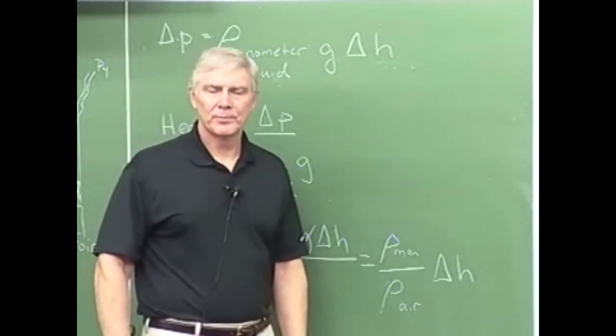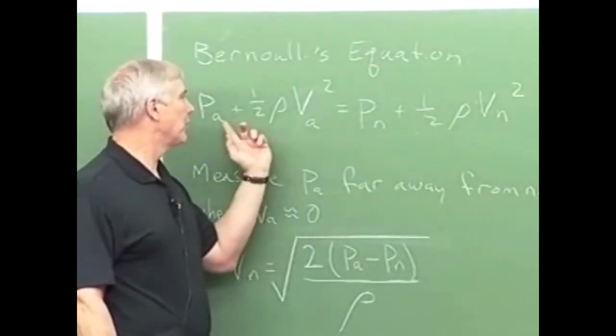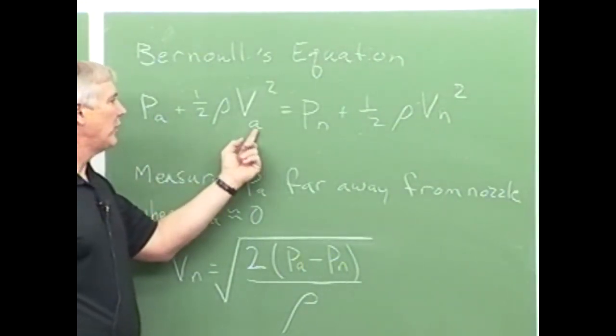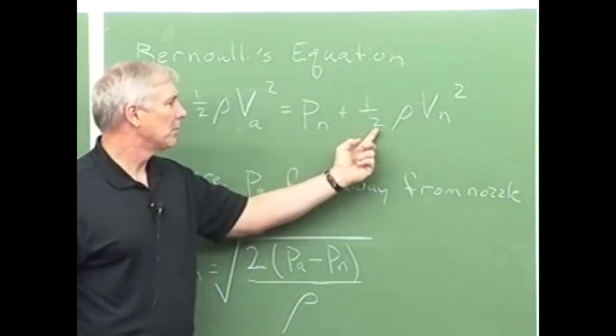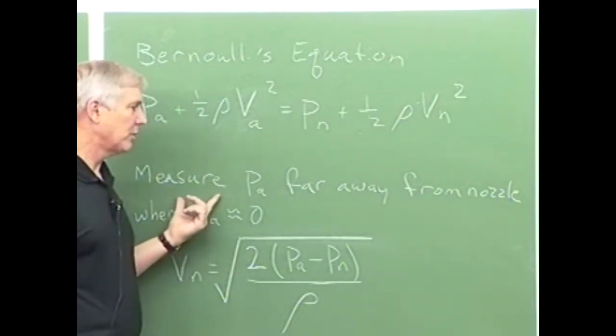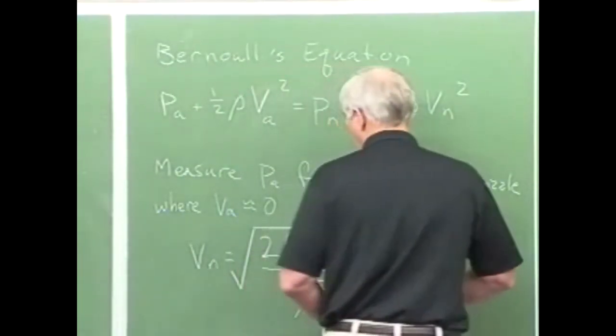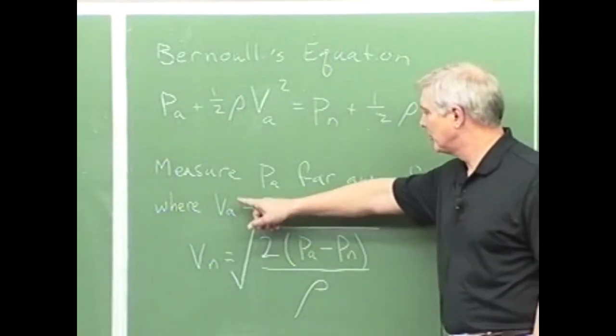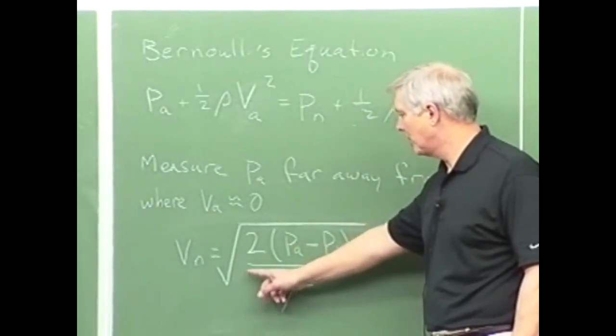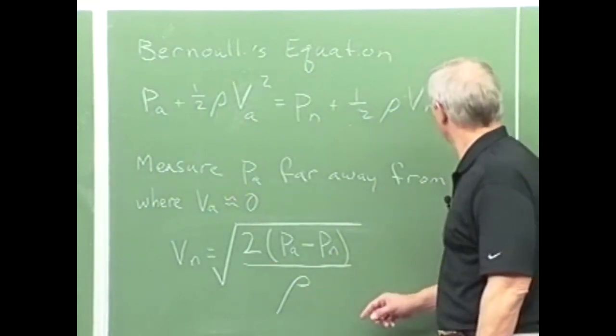In order to get the flow rate, I said we're going to measure the difference in pressure at the nozzle. So we come over here and we use Bernoulli's equation. And I've written Bernoulli's equation on the board. We have the P atmosphere, meaning P out in the room, plus one half rho V of the room velocity squared, equals pressure at the nozzle, plus one half rho V of the nozzle squared. Well, we're going to measure pressure in the room very far away from the nozzle. By measuring it far away from the nozzle, the velocity is zero at that point. So if we rearrange this equation, we get the velocity at the nozzle is just equal to the square root of two delta P over rho, and that's rho of the air in this case.